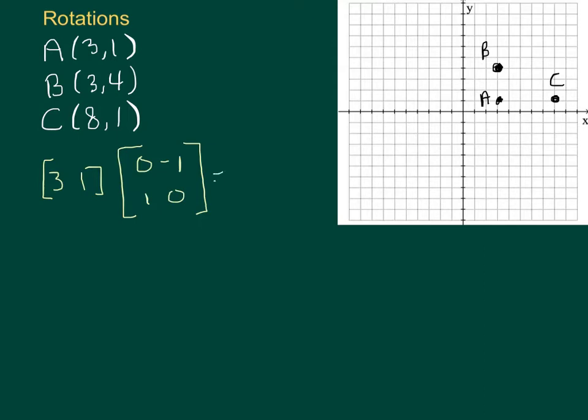Now when you multiply this out you get 3 times 0 plus 1 times 1 is 1, and you get 3 times negative 1 plus 1 times 0 which is negative 3. So I'm omitting the details because at this point I think you can do that on your own. So there's point A, we'll call this A prime.